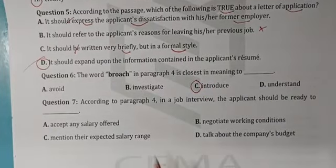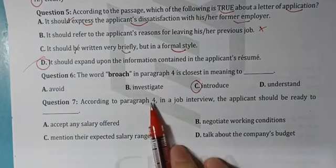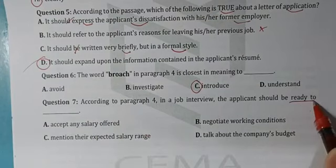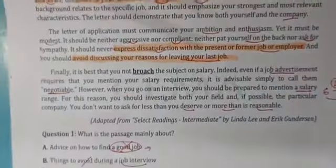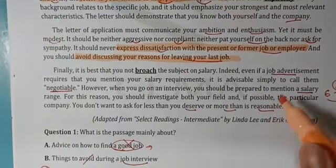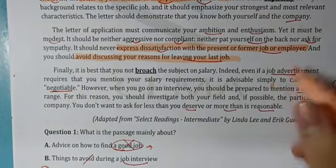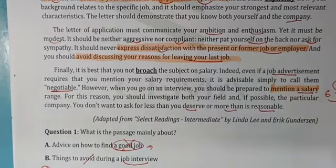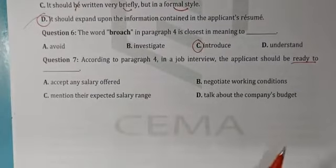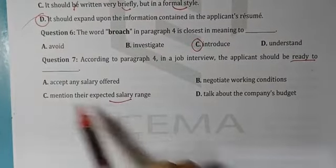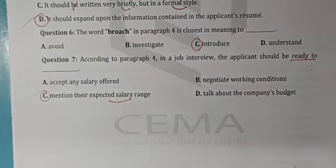Câu số 4: Theo đoạn văn số 4, trong buổi phỏng vấn thì ứng cử viên nên sẵn sàng cho điều gì? Khi đến buổi phỏng vấn, mình nên chuẩn bị để mention về salary range - giải lương. Vậy nên mention về mức lương mình mong đợi. Câu C hợp lý. Vậy là xong bài đọc số 1.